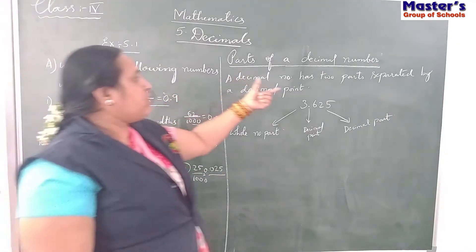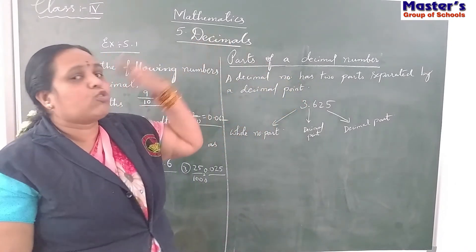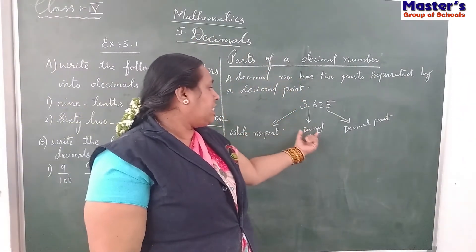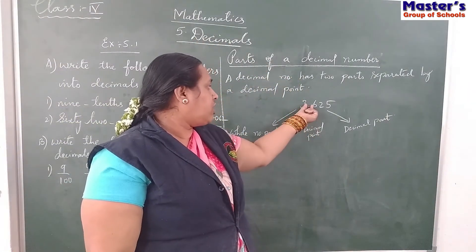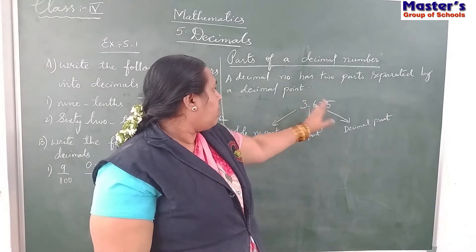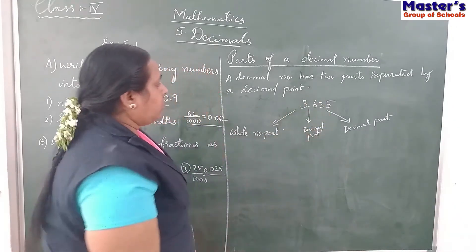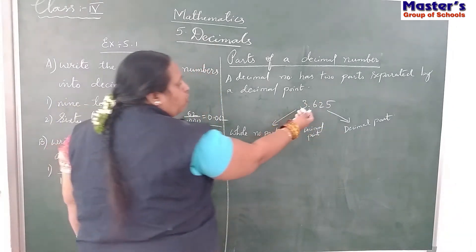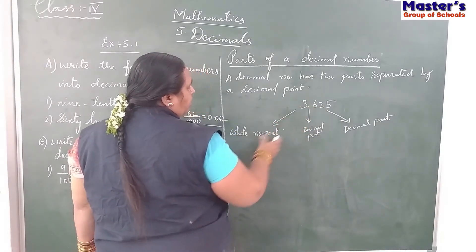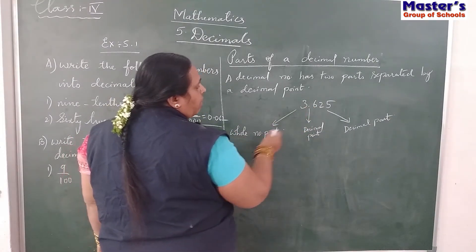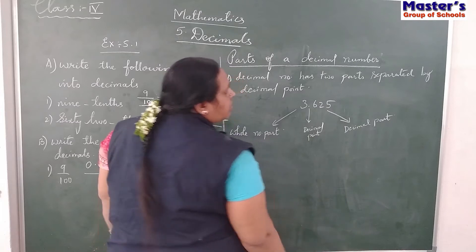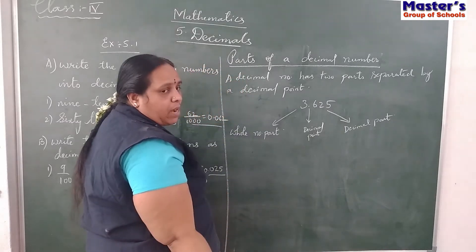Parts of the decimal number. A decimal number has 2 parts which are separated by the decimal point. This decimal point separates the decimal number into 2 parts. Before the point, this number is the whole number. After the point, this number is the decimal part.